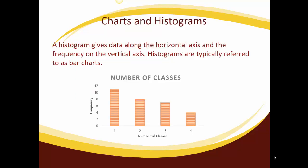A histogram gives data along the horizontal axis and the frequency on the vertical axis. Histograms are typically referred to as bar charts. So once again I have the same data we were talking about, which was the number of classes taken by students, and you can see here that I put the frequency zero up through 12 because 11 was our highest number we used, and then the number of classes 1, 2, 3, and 4.